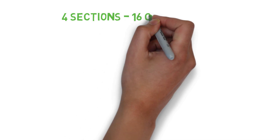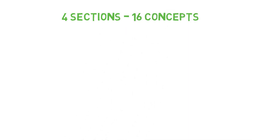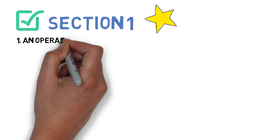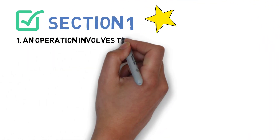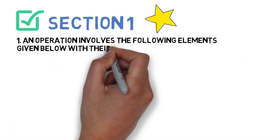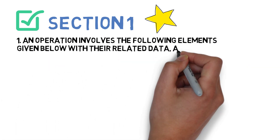Talking about the important concepts we have left for you, there are four sections that you need to finish — nearly around 15 to 16 concepts — and each section will have four to five questions. Section one and section two will be very important. The first question in section one is: an operation involves the following elements given below with the related data.